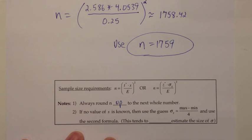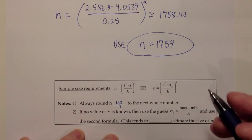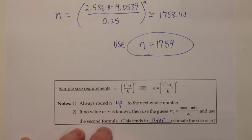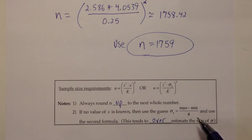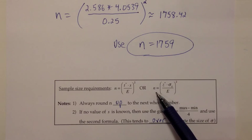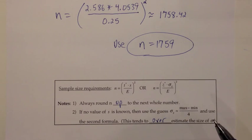If no value of S is known, then go ahead and use a guess for sigma. The way we're going to get that guess is we're going to take a guess at the max and the min, subtract those from each other and divide by 4, and then we'll use this formula. This tends to overestimate the size of sigma. We've built a formula that, in our guessing strategy, tends to give us an answer that's a little too big. Because if we do that, we'll get an N that's too big, and we'd rather have an N that's too big than too small.